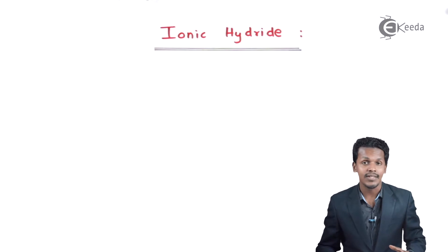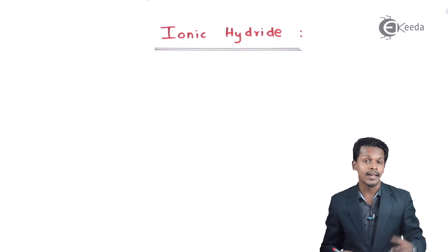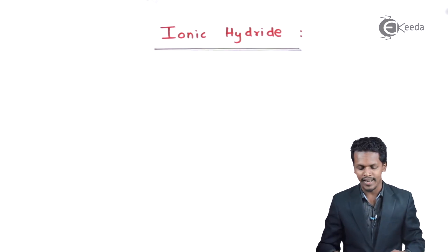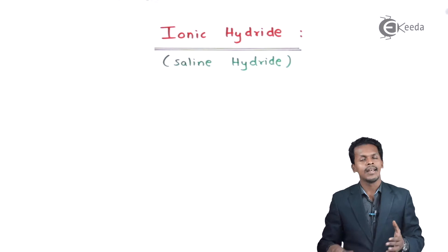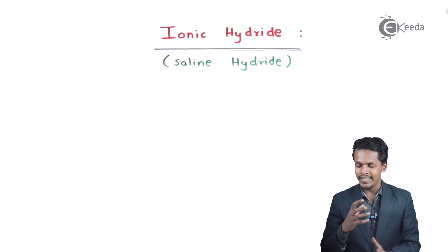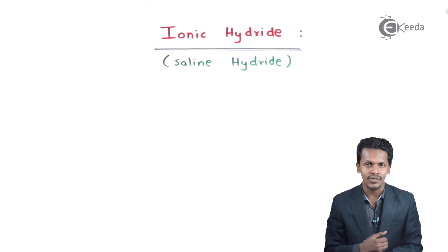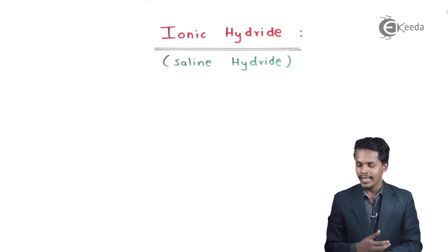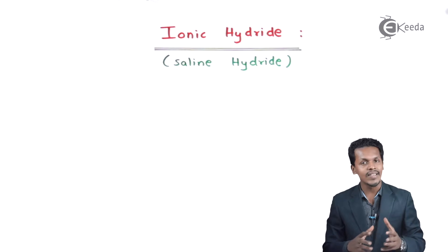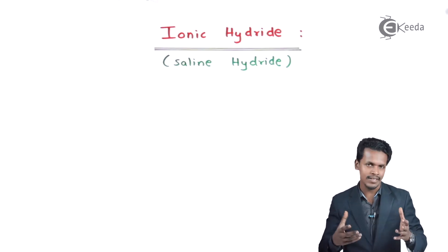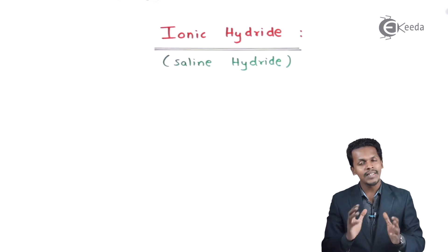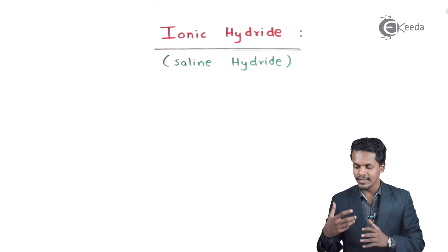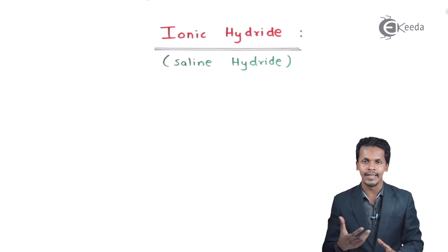Talking about the ionic hydrates, they have another name and that is saline hydrate. This name came because these hydrates have a salt-like nature — for example, NaCl is a salt and it is very much soluble in water. Similarly, ionic hydrates have the same kind of nature, and there are different criteria that I am going to talk about. These hydrates are very much soluble in water.